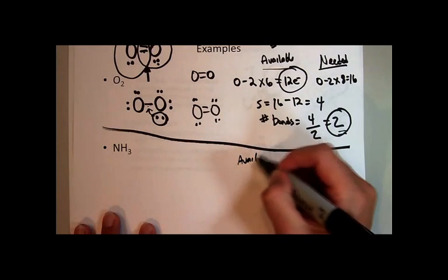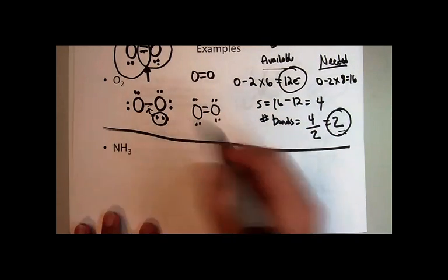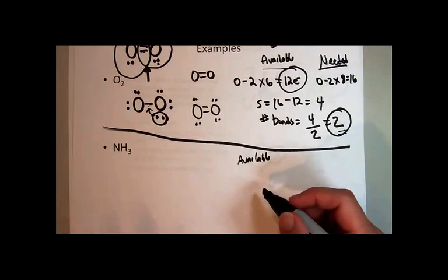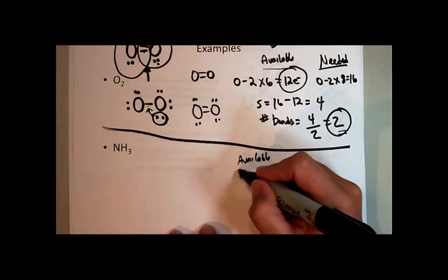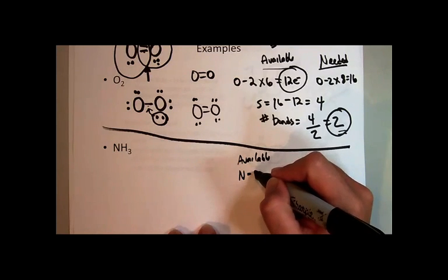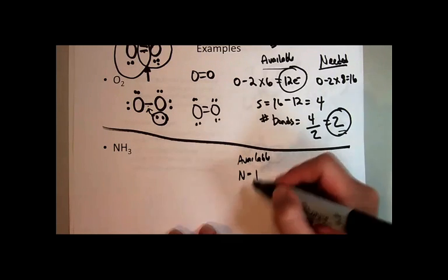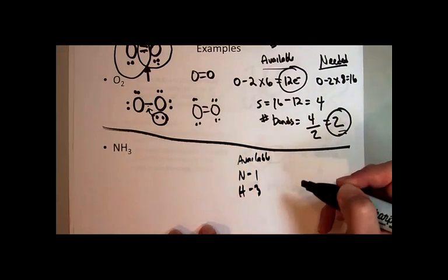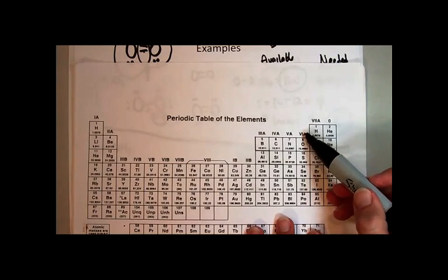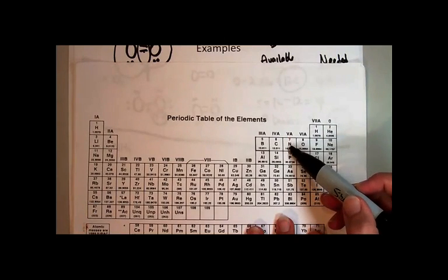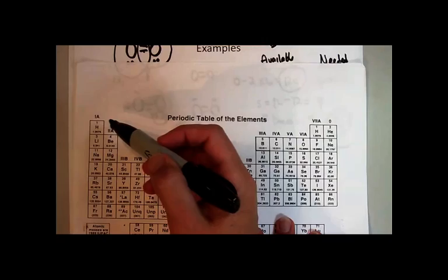So available, that's how many electrons are available from all of the valence shells of all of the atoms that are in the molecule. In this case, I have nitrogen, I have one nitrogen, and I have hydrogen, and there's three of them. And you have to look at the periodic table to remember that there's five valence electrons in nitrogen, and one valence electron,